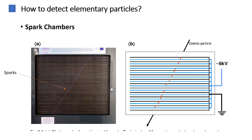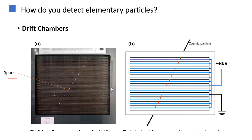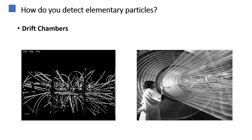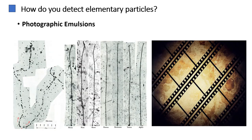Spark chambers detect particles by creating sparks along the path of charged particles. They were an early method of detecting and measuring the paths of high-energy particles like cosmic rays, and are used in particle tracking systems and particle accelerators. Drift chambers detect charged particles by measuring the movement of ions in a gas. Emulsions consist of layers of photographic material that can record the tracks of charged particles, and were historically used in early particle physics experiments.